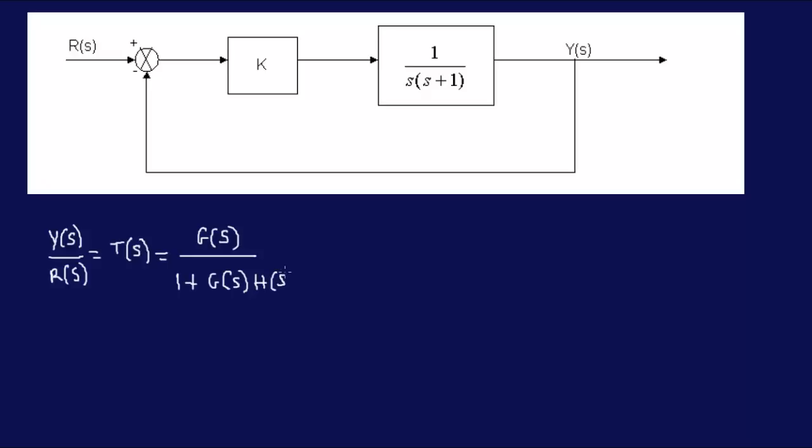So this is typically how most control systems are expressed. Now, in this case, there's no H of S. This is called unity feedback, basically, because H of S over here is equal to 1.